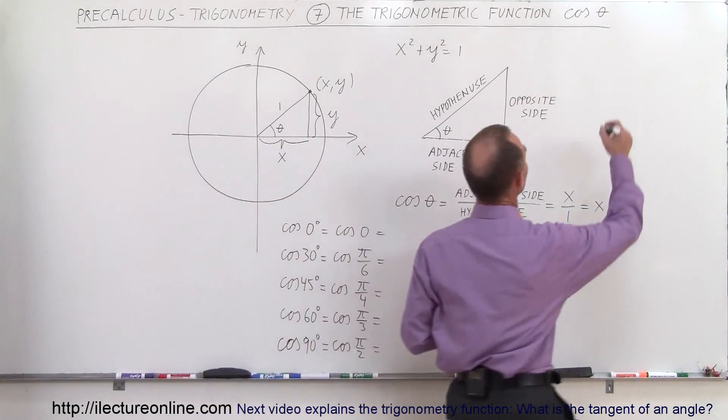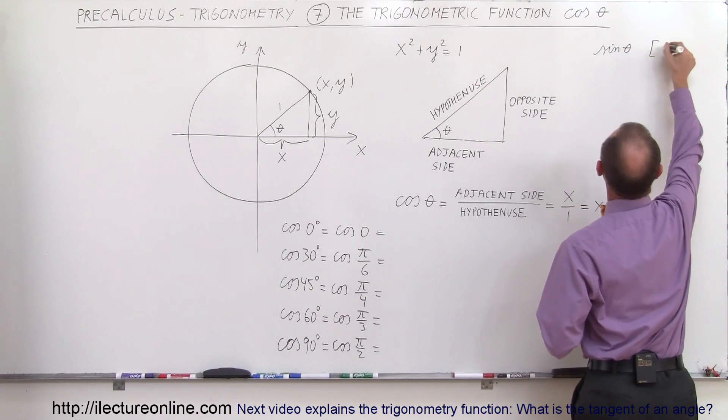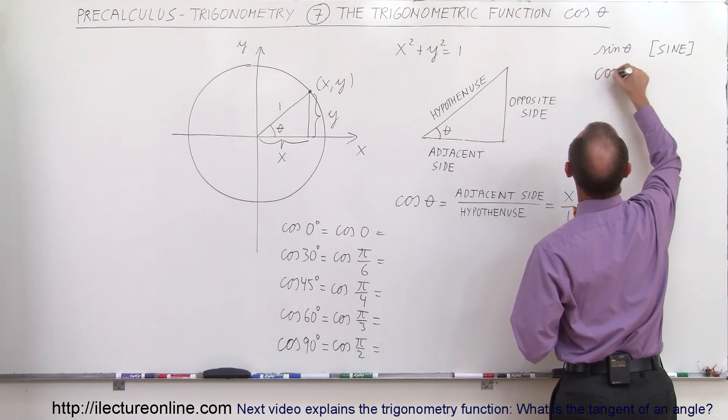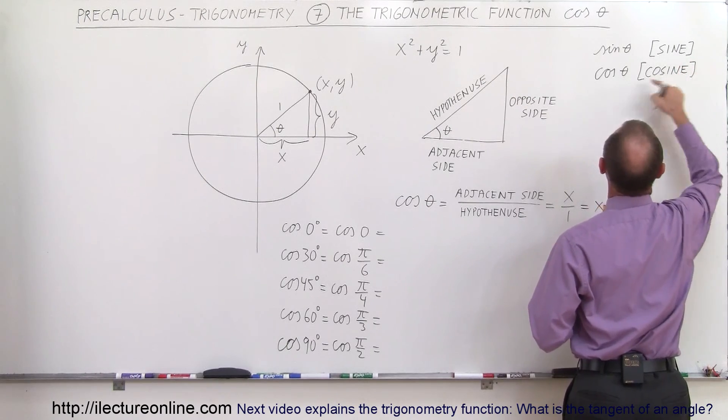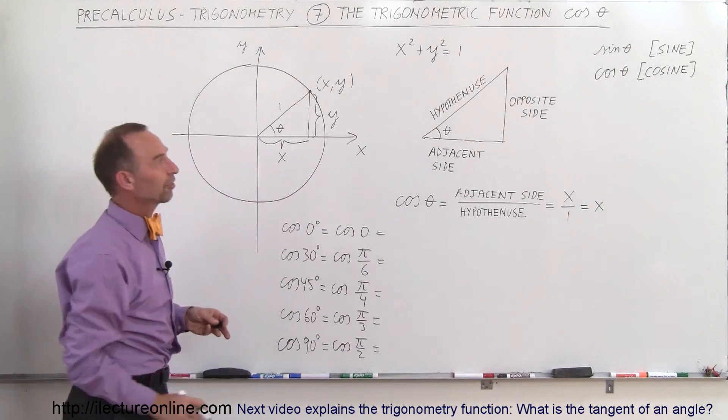We spell the cosine like this. The sine of theta, we write the word sine like that, and the cosine of theta, we write the word cosine like that, and we use the symbol cos θ for the cosine of theta.